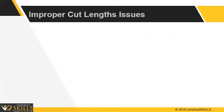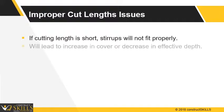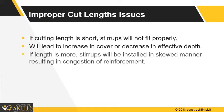Some important cut length issues: if cutting length is short, stirrups will not fit properly, and it will lead to an increase in cover or decrease in effective depth. If length is short, stirrups will be installed in a skewed manner, resulting in congestion of reinforcement.